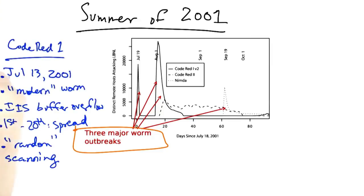Code Red 1 was released on July 13th, 2001 and was the first modern worm. It exploited a buffer overflow in Microsoft's IIS server. From the 1st through the 20th of each month, it would spread by finding new targets using a random scan of IP address space.